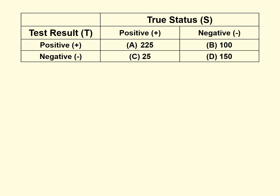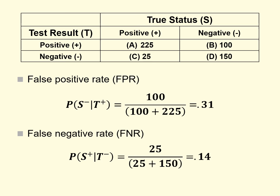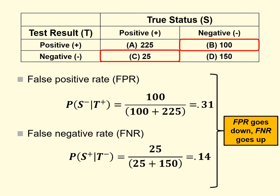From our clinic data, the false positive rate is 0.31 and the false negative rate goes to 0.14. The false positive rate goes down and the false negative rate goes up when transitioning from a 20% base rate setting to a 50% base rate setting. The test makes fewer false positives but more false negatives. When base rates are high, it's easy for the test to identify positive cases — more true positives, fewer false positives — but harder to identify negative cases — fewer true negatives, more false negatives.